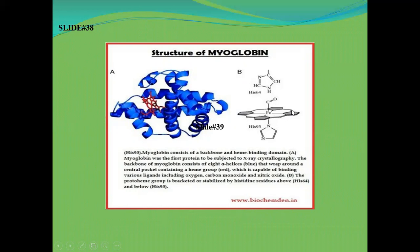The protoheme group has protoporphyrin rings. The protoheme group is bracketed or stabilized by histidine residues above at position 64 and below at position 93. Histidine is a type of amino acid. Hemoglobin is the transported protein and myoglobin is the stored protein, playing an important role in muscle activity — storing oxygen taken from the red blood cells for use in muscle during activity.